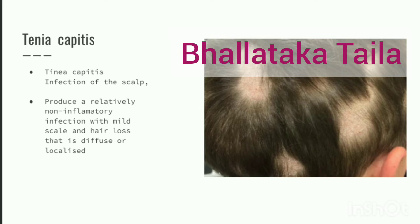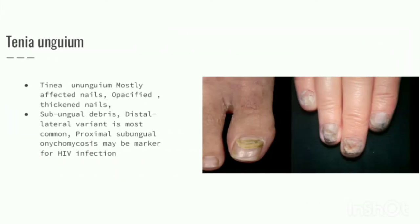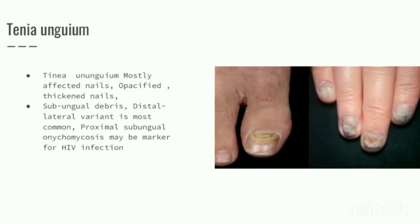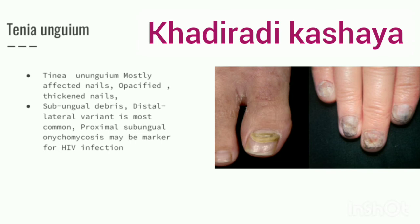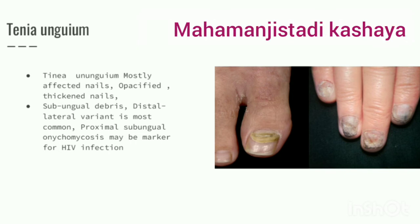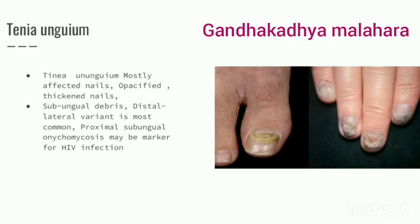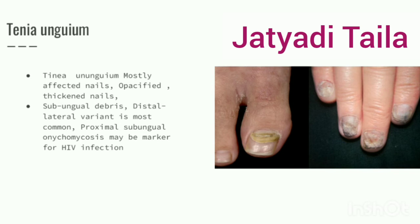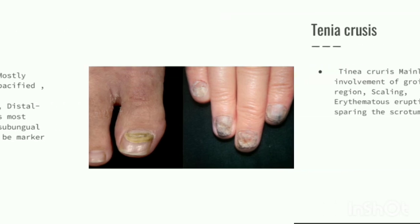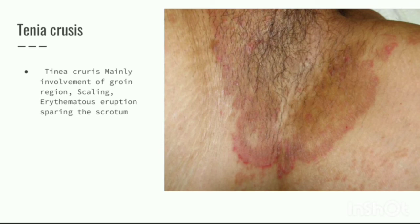Tinea unguium mostly affects the nails, causing opacified and thickened nails, sub-ungual debris. The lateral variant is most common, and proximal sub-ungual onychomycosis may be a marker for HIV. The patient is advised to take Khadiradi Kashaya daily, and Maha Manjishthadi Kashaya is advised externally. Gandha Khadyam and Jatyadhi Taila are very beneficial, and maintaining hygiene is very important.